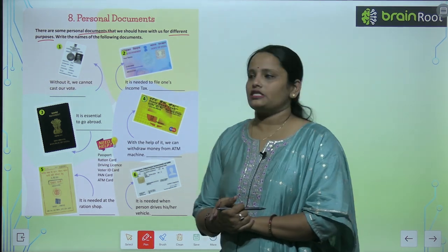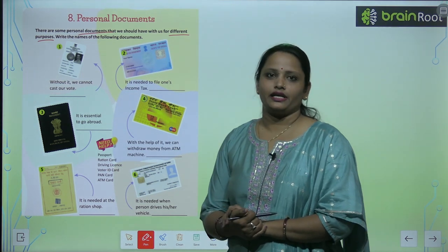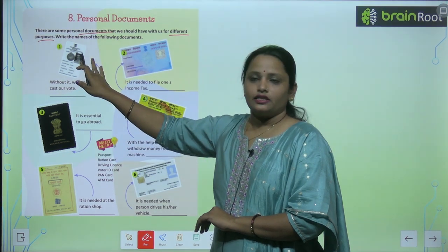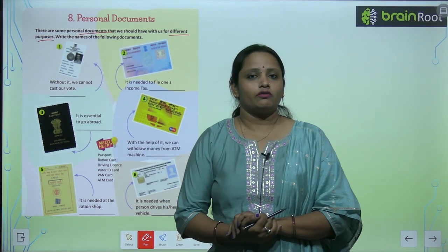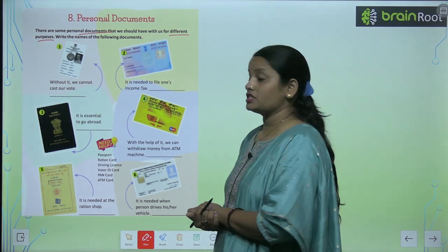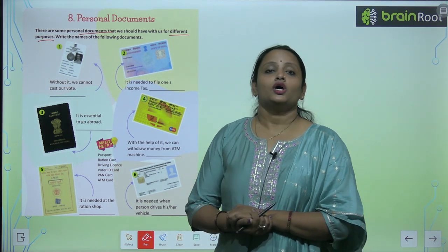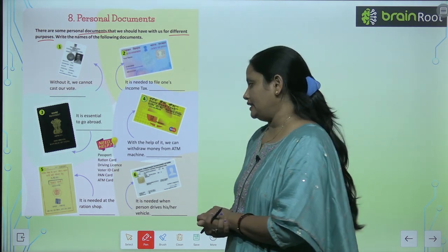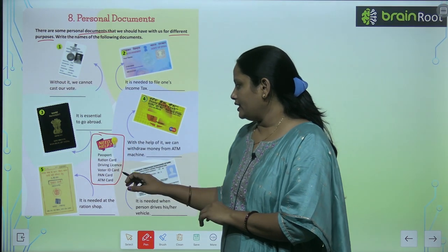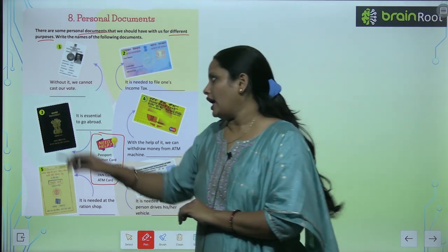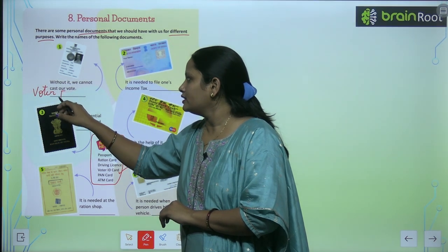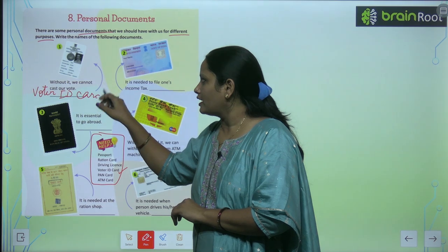Write the name of the following documents. In documents ka hume name likhna hai. So aap dekh sakte ho, yaha pa ek pehli picture hai. Without it, we cannot cast our vote. Ham iske bina apna vote nahi de sakte. So yes, it is Voter ID. Yaha pe aapko help box diya hua hai — it is Voter ID.